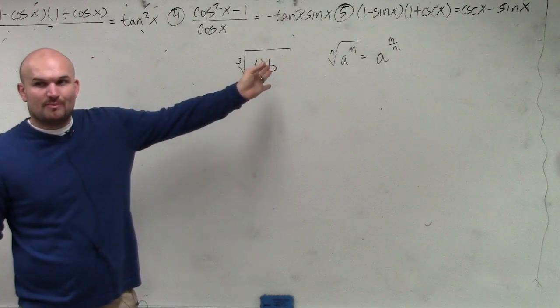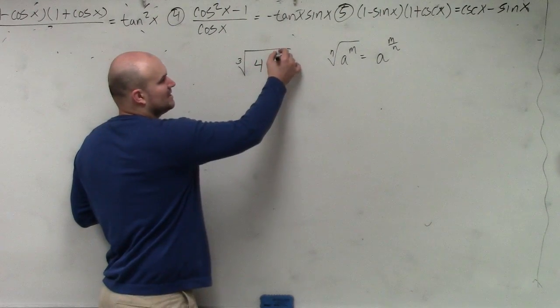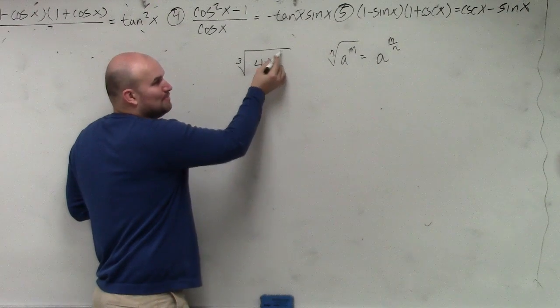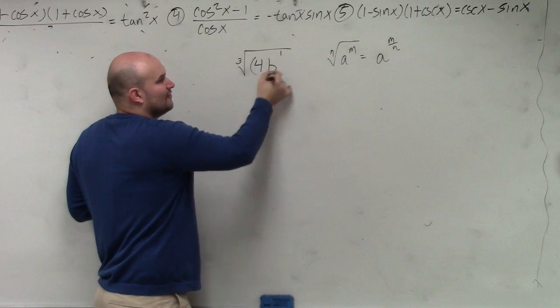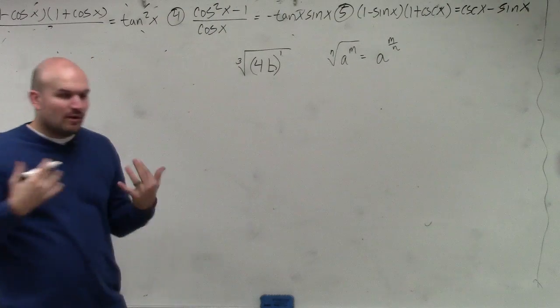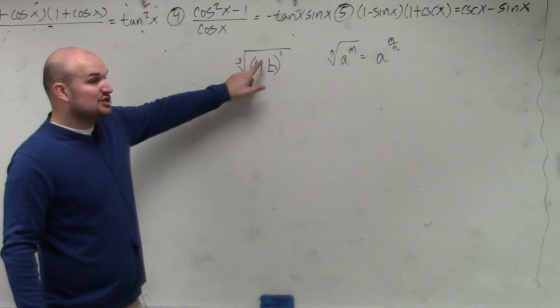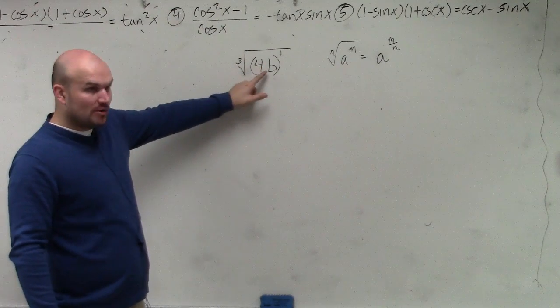Well, m, we don't see this as being raised to a power. So we know that it's being raised to first power because it's not shown, but we've got to be careful. It's not b is being shown to the first power. It's 4b. So we want to make sure we use parentheses in this case. So now a is not just b. a is 4b.